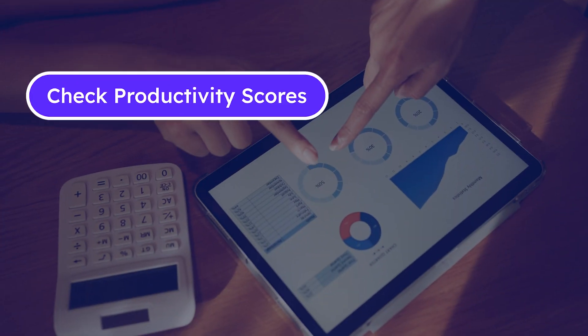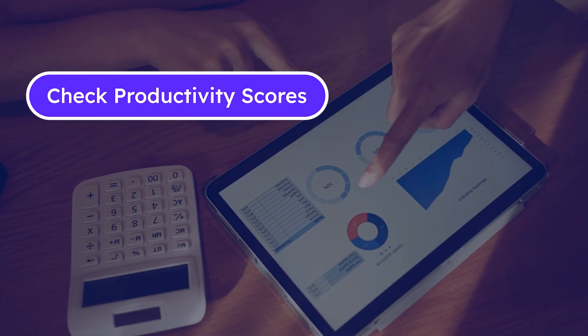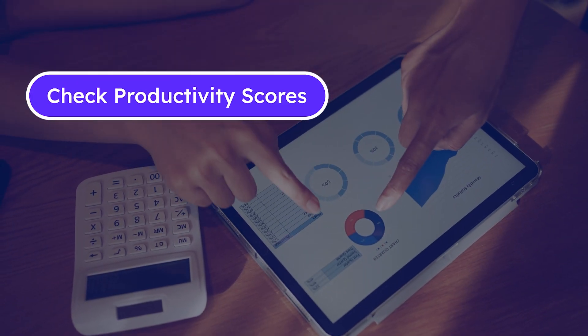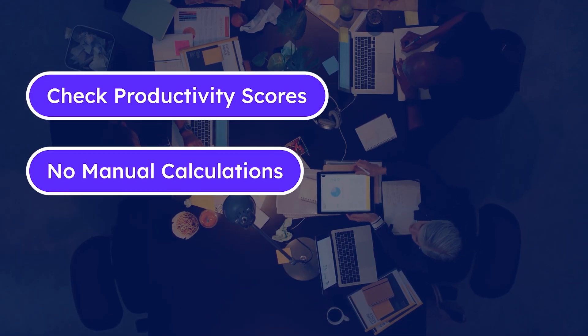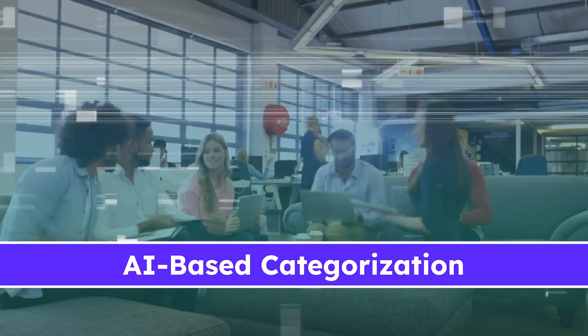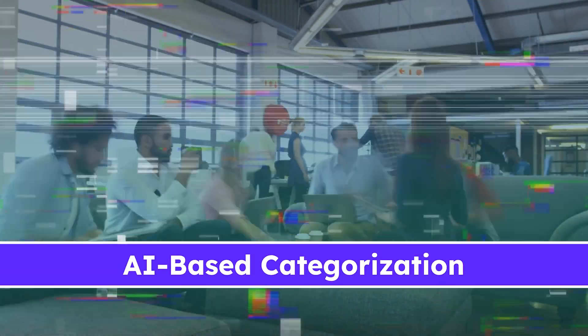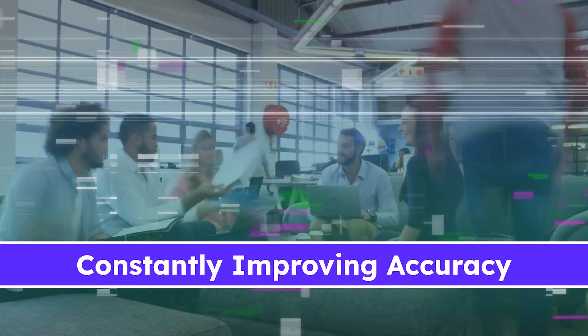Productivity scores automatically reflect actual productive time — no guesswork, just facts. As more teams use Work Status, our app and URL classification improves, thanks to continuous learning.